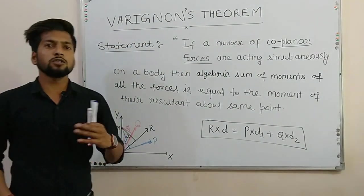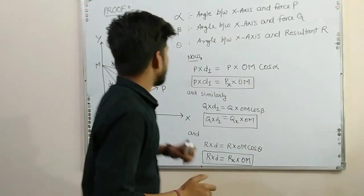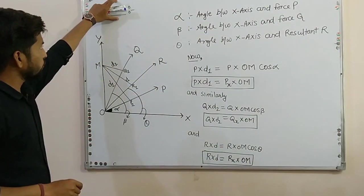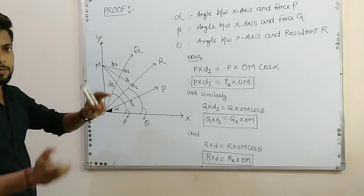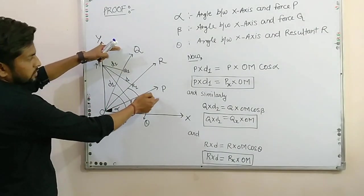Now we are going to prove this. So let's discuss the proof of Varignon's Theorem. In the proof we are doing the same figure we drew earlier. Two forces are P and Q and their resultant is R.